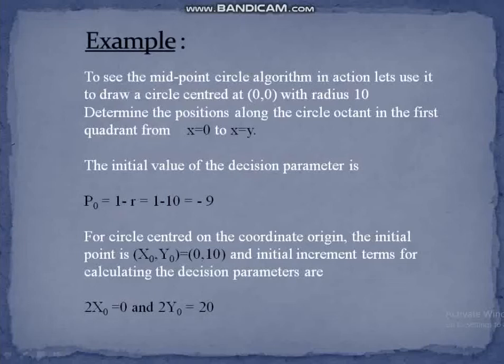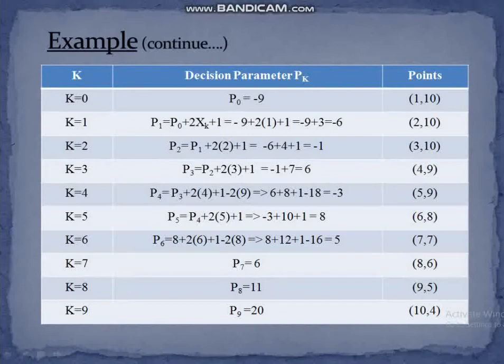Let us take an example to be more clear about the midpoint circle algorithm. We have a circle centered at (0, 0) with radius 10. We have to calculate the points of the circle from x = 0 to x = y. Initially, we calculate the decision parameter p₀ = 1 − r, which equals −9. Starting at k = 0, since the initial decision parameter is less than 0, the starting point is (1, 10) — x is incremented and y remains the same.